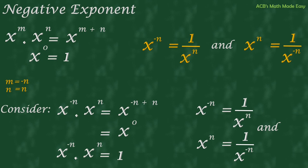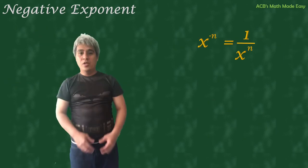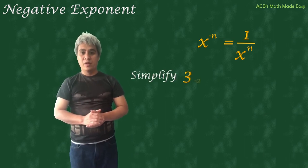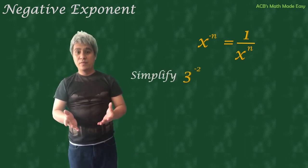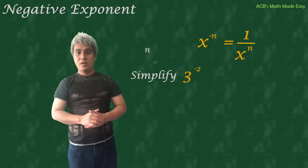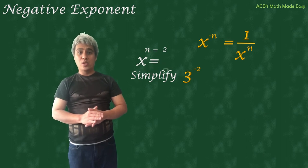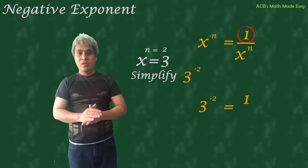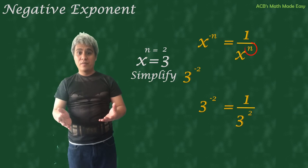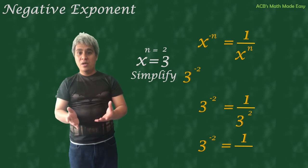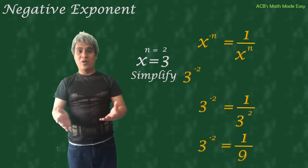Now we have proven the law on negative exponents. Using the formula, we can simplify 3 raised to negative 2. The value of n is 2 and the value of x is 3. So 3 raised to negative 2 equals 1 over 3 raised to 2, which is 1 over 3 squared. Since 3 squared is 9, we get 3 raised to negative 2 equals 1 over 9.